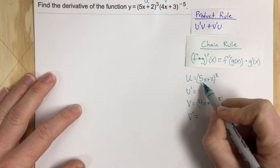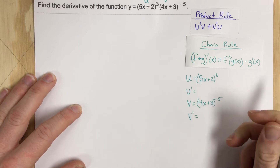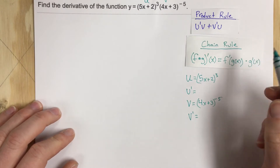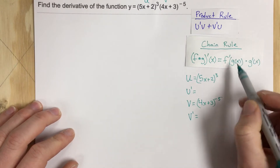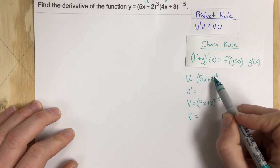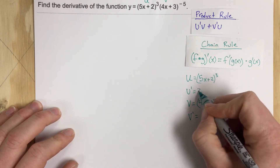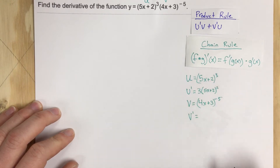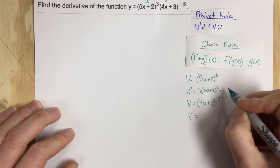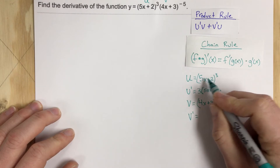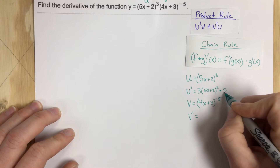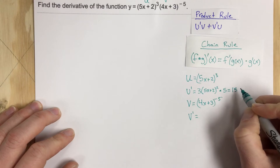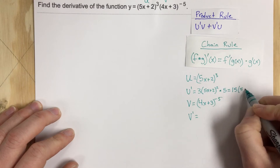Notice we're going to have to use the chain rule here and here to find these derivatives — even with the quotient rule, you'd use the chain rule regardless. The derivative of the outside function is 3 times 5x plus 2 to the second power, times the derivative of the inside function, which is 5. So 5 times 3 gives us 15, and u prime equals 15 times 5x plus 2 to the second power.